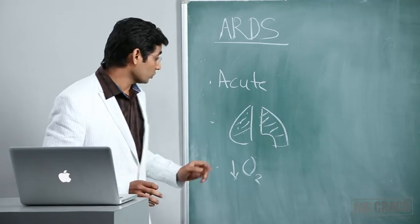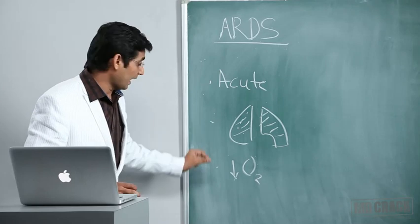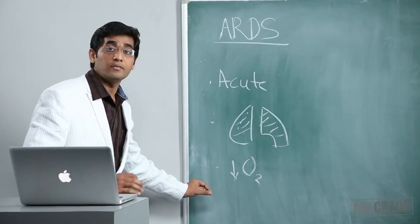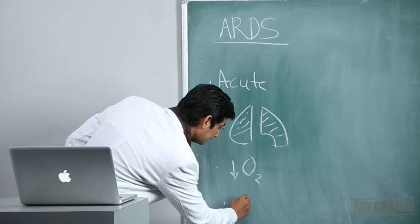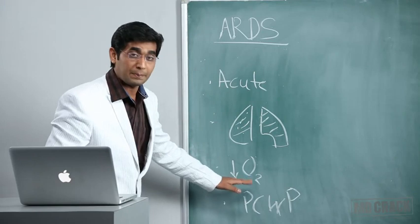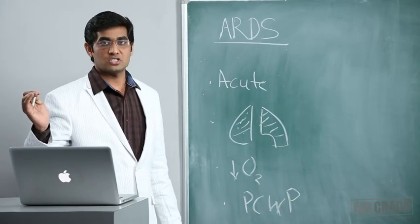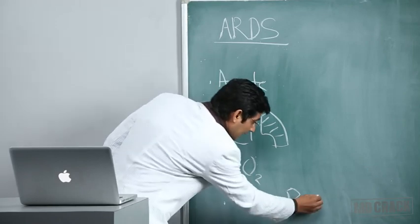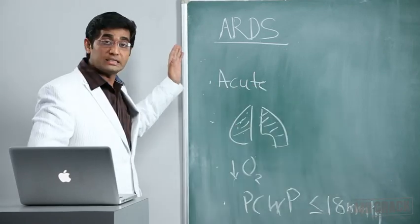The fourth and most important point in defining ARDS, usually forgotten by students, is the pulmonary capillary wedge pressure. This pulmonary capillary wedge pressure indicates left atrial hypertension and it should be less than or equal to 18 mm of Hg.